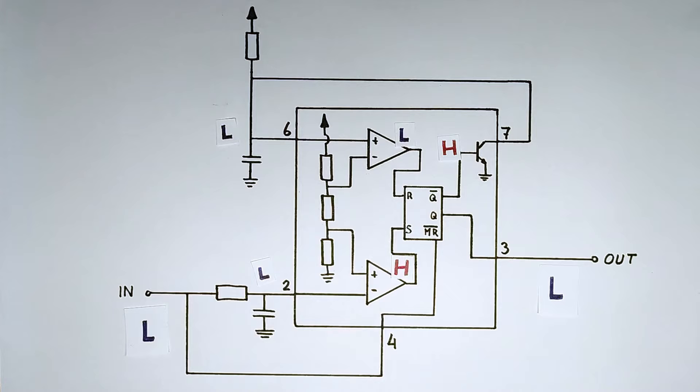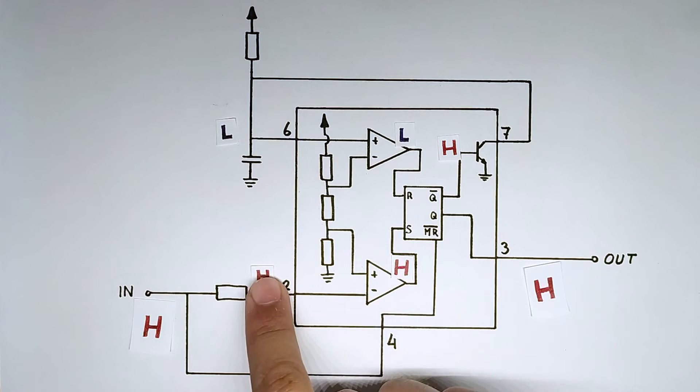So when we decide to bring the input high, this brings the master reset high so it's not active anymore. And for a brief moment the capacitor here is still low while it's charging, and this means that the flip-flop here gets set and the output goes high. And shortly after the capacitor charges and so the output here is not high anymore.